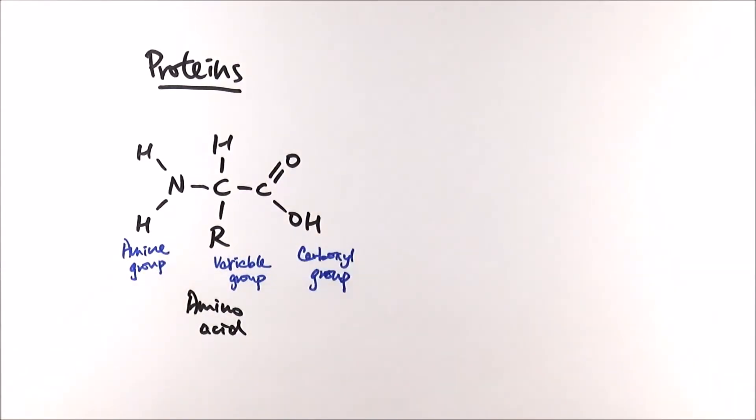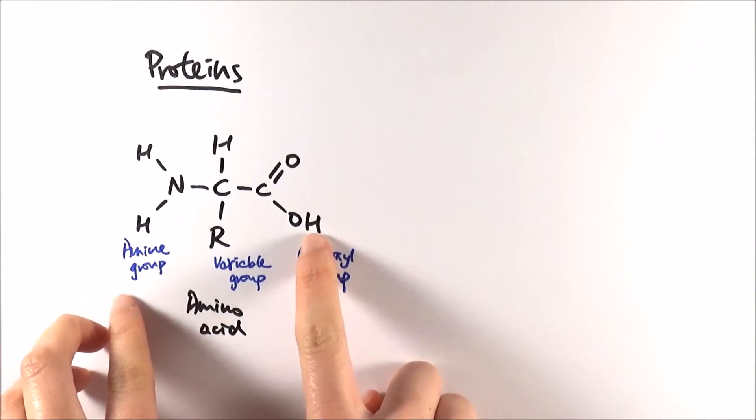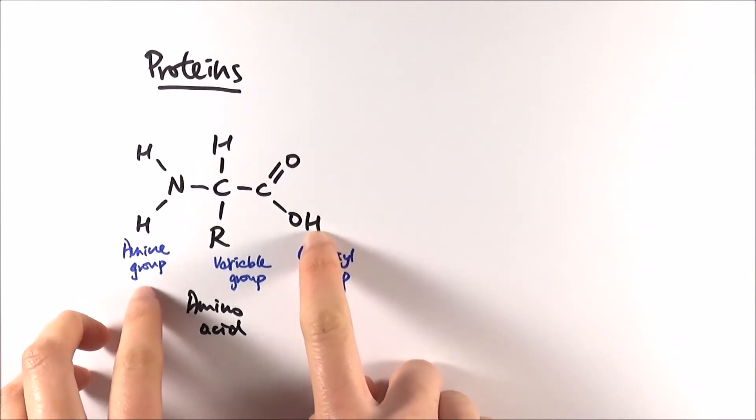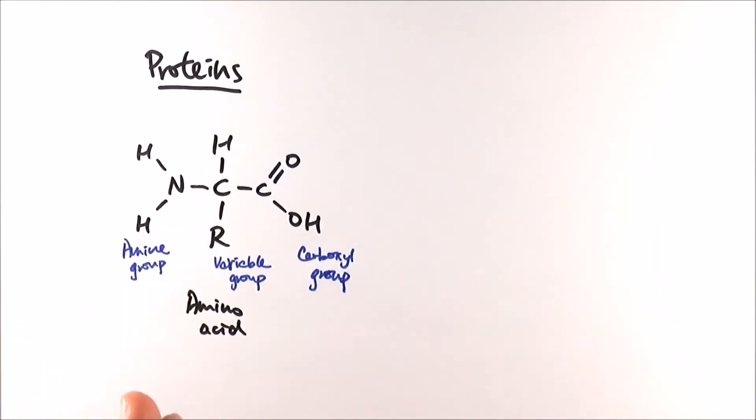In A-level chemistry, some of you might come across the concept of zwitterion, which means a single molecule that exhibits both positive and negative charges as an ion. What can happen is that COOH can lose the hydrogen, become COO-, which is a negative ion, and this bit can gain one hydrogen, becomes NH3+, which is the positive side of it.